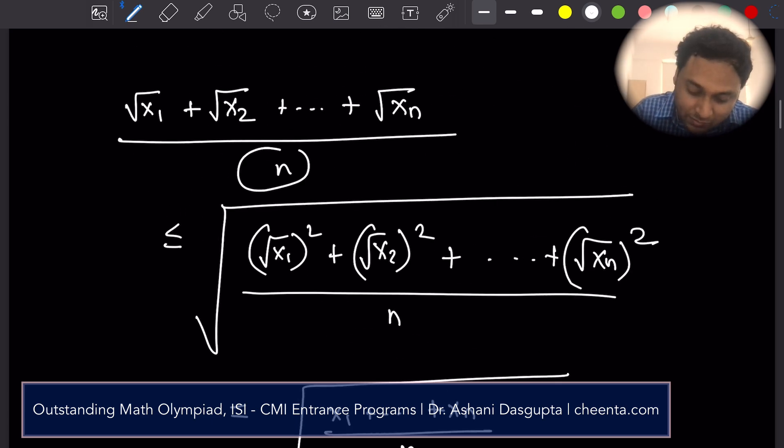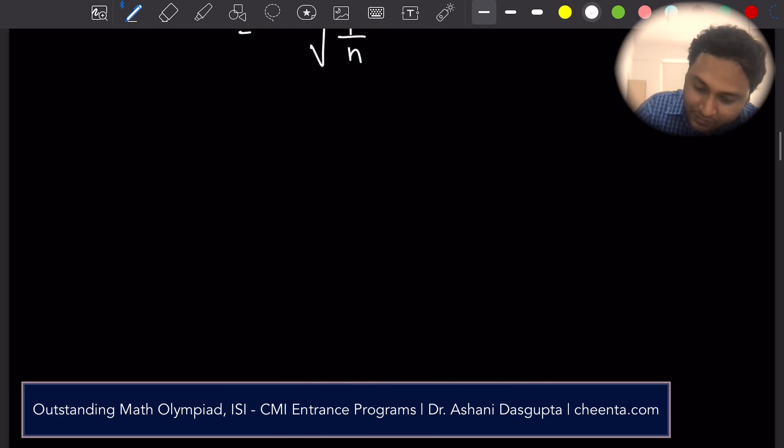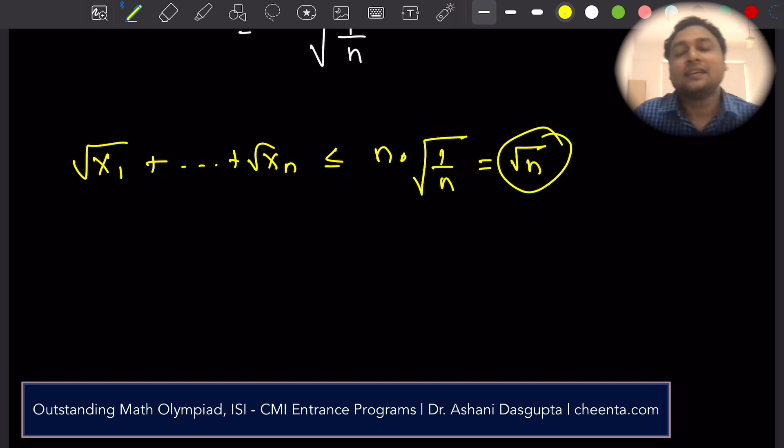We can just cross multiply now. Square root of x1 up to square root of xn is less than or equal to n times square root of 1 by n, which is square root of n. So that's the final answer. Square root of n is the largest possible value of square root of x1 up to square root of xn. Isn't it interesting?